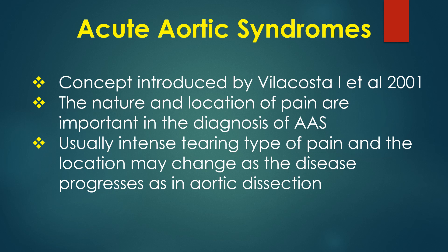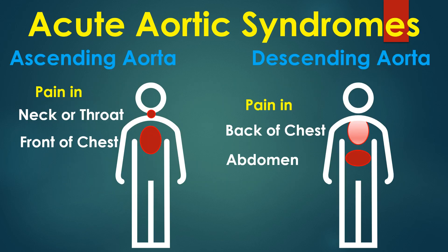The nature and location of pain are important in the diagnosis of acute aortic syndrome. Usually it is an intense, tearing type of pain and the location may change as the disease progresses, as in aortic dissection. Pain in the front of the chest, neck or throat suggests ascending aortic involvement, while pain in the back or abdomen suggests involvement of the descending thoracic or abdominal aorta. Most acute aortic syndromes are associated with significant hypertension, though aortic dissection may have a background of diseases like Marfan syndrome.